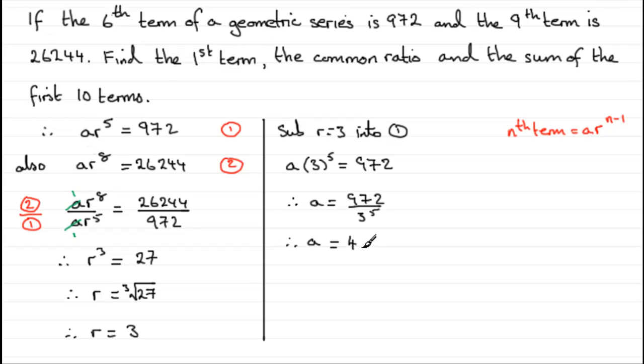So we've got the first term now, we've got our common ratio. All we need to do is find the sum of the first 10 terms. To find the sum of the first 10 terms, remember the sum of the first n terms is given by S_n. That can often be written as a(r^n - 1)/(r - 1). Or you might know another version of this formula where we times top and bottom by negative 1, and you get a(1 - r^n)/(1 - r). It doesn't matter which one of these formulas you use, you should get exactly the same answer.